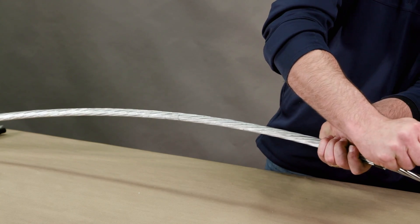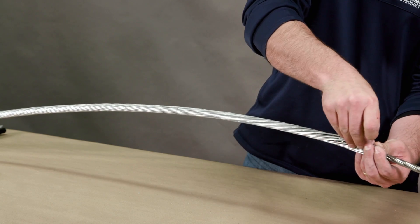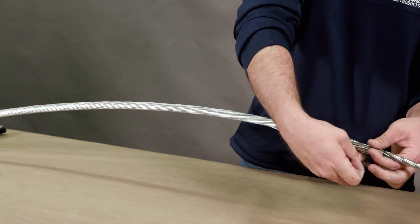Cut tape and unravel the outer layer of strand back to the hose clamp location. Be careful not to deform outer strands.